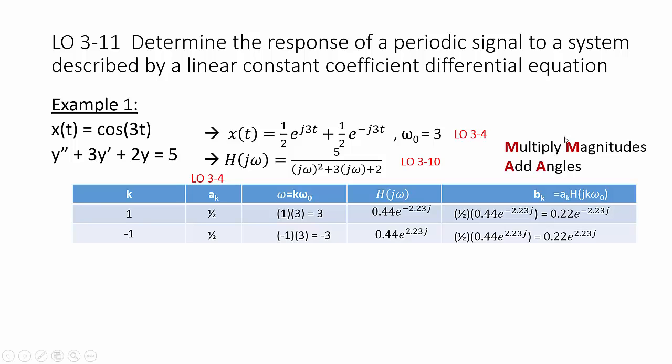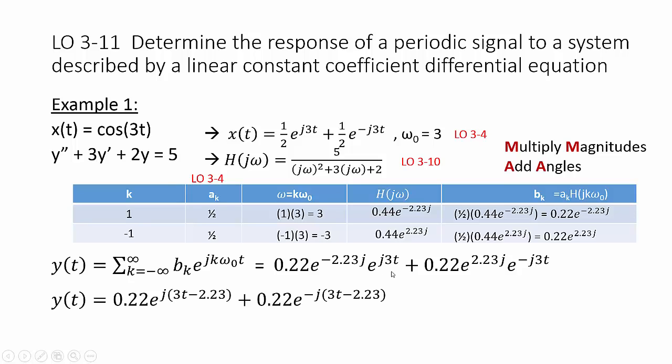Remember, we're going to multiply the magnitudes and we're going to add the angles. In this case, the 1 half had no angle. But we'll see that in further examples. We then use our synthesis equation for the output where we call our coefficients b sub k. We can write things out as a sum of complex exponentials. Do algebra to combine the exponents. And again, use Euler's formula to turn it back into a cosine with learning outcome 3.5.